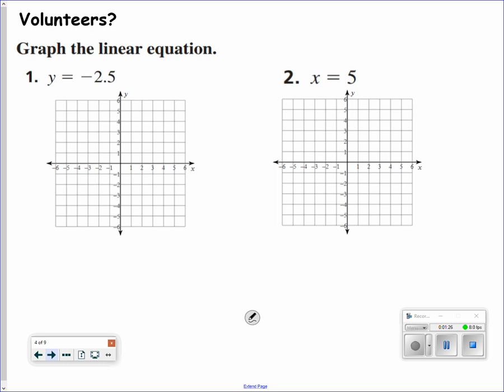You try now. y equals negative 2.5. Hit pause for a second. Try these two. Welcome back. So negative 2.5 on the y axis would be a horizontal line through negative 2.5. I have x equaling 5 is a vertical line going through the x axis at 5.